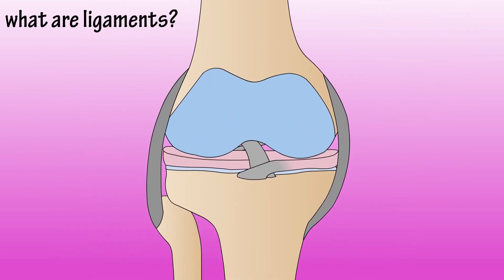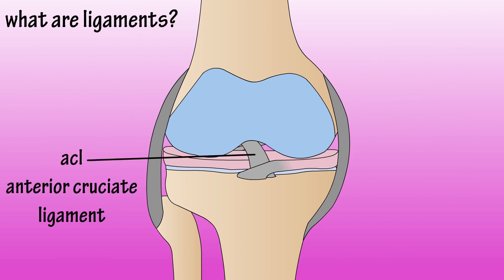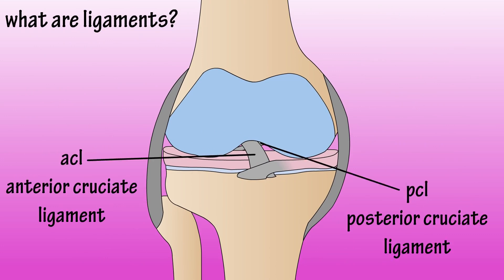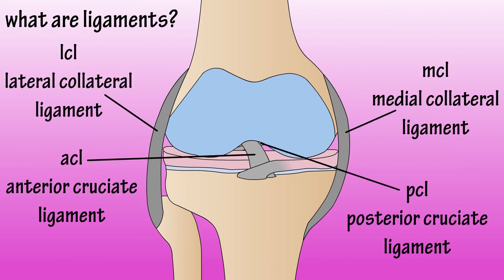If we take a look at a knee joint, we can see four different ligaments: the ACL, PCL, MCL, and LCL.